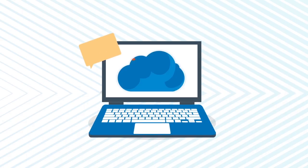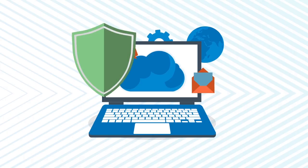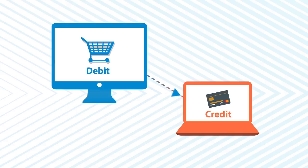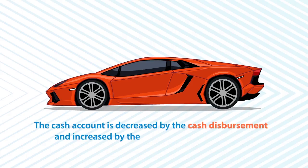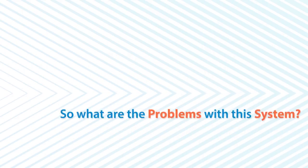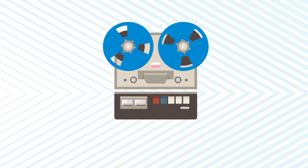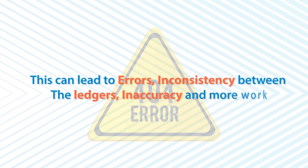Every entry to an account or ledger requires a corresponding and opposite entry to a different account or ledger. In other words, every debit that is recorded must be matched with a credit. For example, if a hire company purchases a new hire car for cash, the cash account is decreased by the cash disbursement and increased by the receipt of the new vehicle. So what are the problems with this system? First, everything needs to be recorded twice. This can lead to errors, inconsistency between ledgers, inaccuracy and more work.